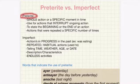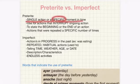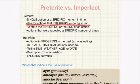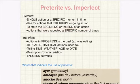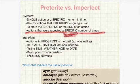To start off, for preterite, you're going to use it when there's a single action or a specific moment in time. You're also going to use it for when actions are interrupting the ongoing action. You also use it to state the beginning or the end of an action. And lastly, you're going to use it for actions that were repeated for a specific number of times.